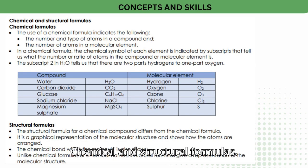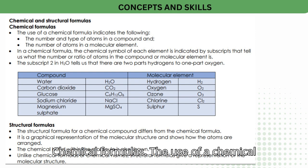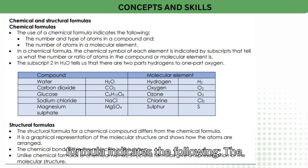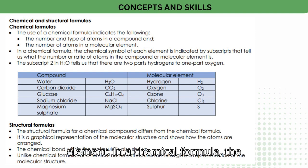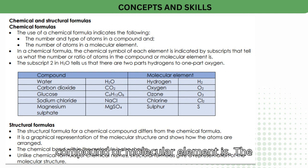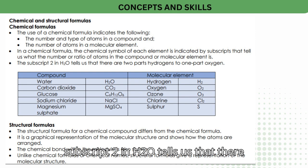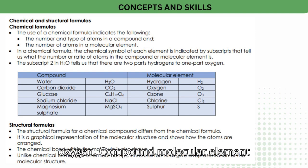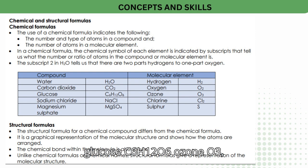Chemical and structural formulas. Chemical formulas indicate the number and type of atoms in a compound and the number of atoms in a molecular element. In a chemical formula, the chemical symbol of each element is indicated by subscripts that tell us the number or ratio of atoms in the compound. For example, the subscript 2 in H₂O tells us there are two parts hydrogen to one part oxygen. Examples include: water (H₂O), carbon dioxide (CO₂), glucose (C₆H₁₂O₆), sodium chloride (NaCl), and magnesium sulfate (MgSO₄).